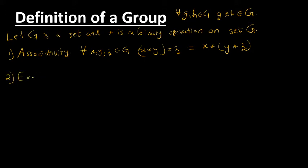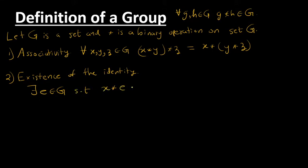The second property is existence of the identity. That means there exists E in G such that x star E equals E star x equals x. So there is an element E in G such that if you do this star binary operation with any element, nothing will happen to that element — you will end up at the same element.